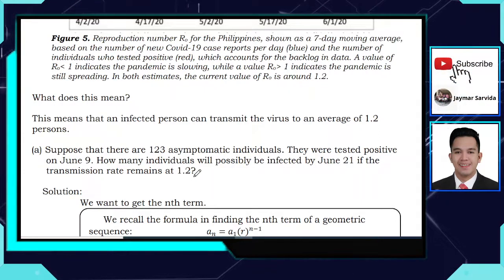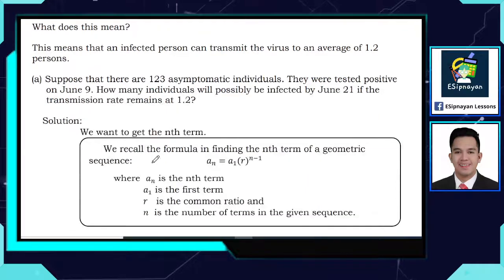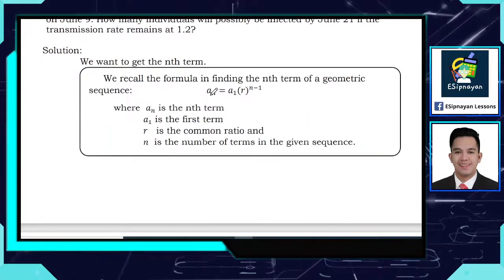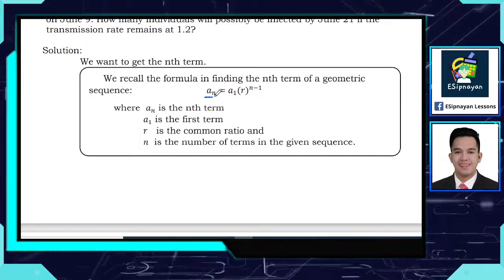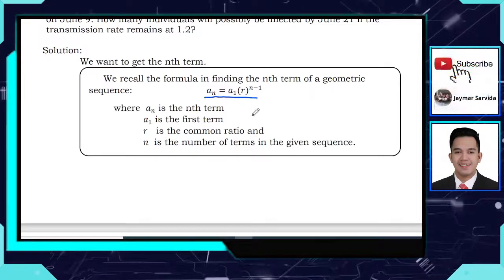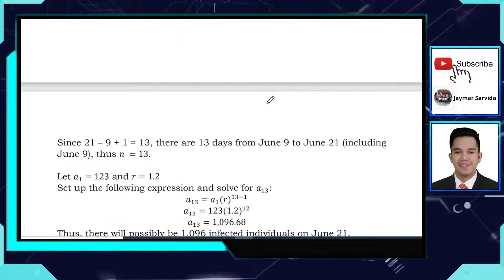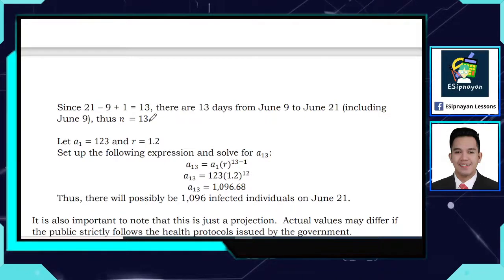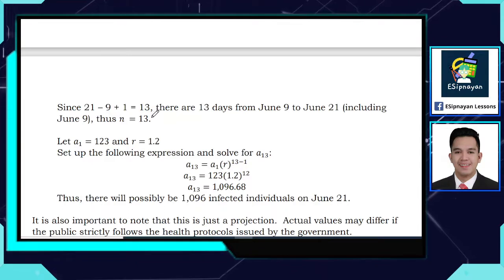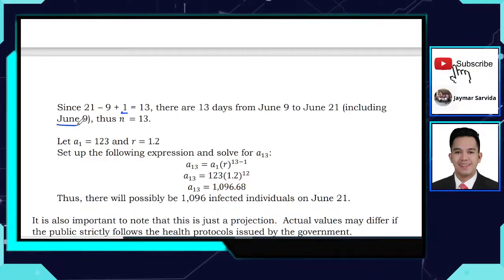How many days are there from June 9 to June 21? A total of 13 days — that is 21 minus 9 plus 1, because June 9 is included. That's why n is equal to 13.